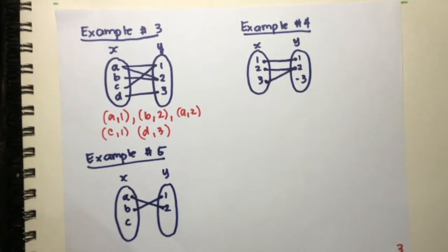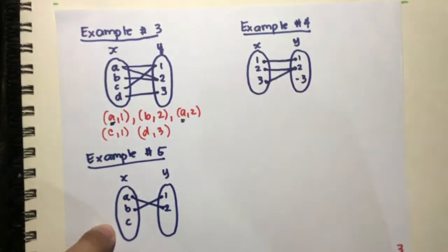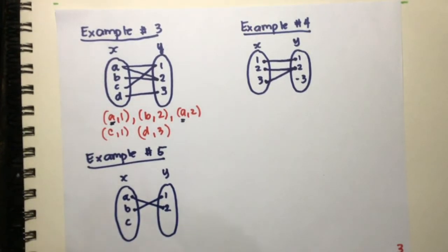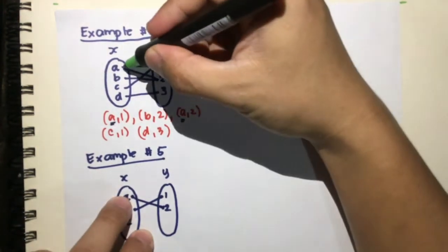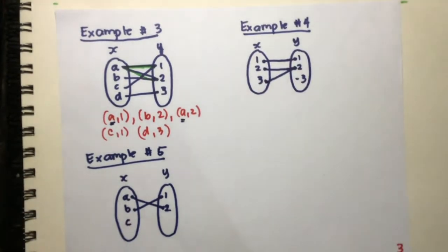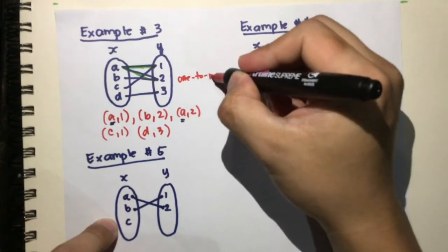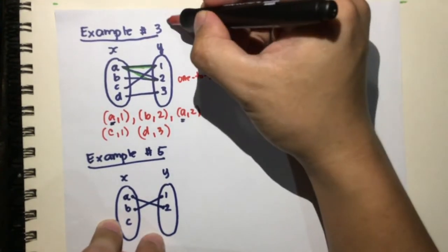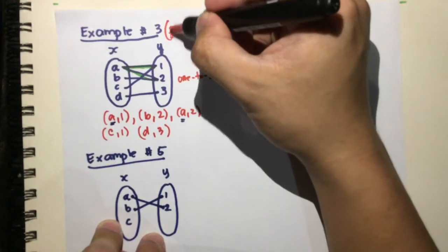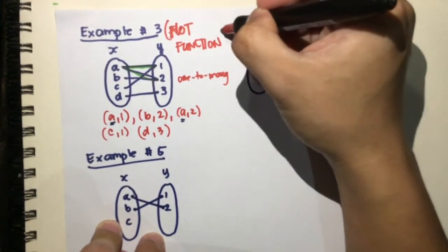For a function, there should be no one element with two different y's. But observe here — we have 'a' appearing twice, meaning this one x-element 'a' has two different y values. This type of relation is called one-to-many, and a one-to-many relation will never be a function. So this mapping diagram is not a function.